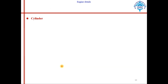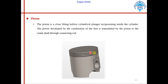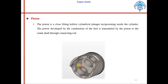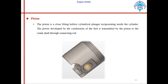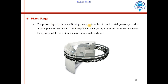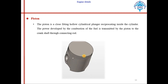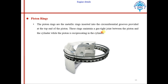The piston transfers force to the connecting rod, the connecting rod transfers force to the crank, so the crank rotates and the crankshaft rotates. The piston is basically a hollow plunger. On the top of the piston, three slots are provided. This hole is for the pin joint. Next are the piston rings — metallic rings inserted into circumferential grooves provided at the top end of the piston, assembled into those grooves.